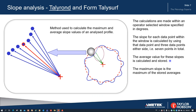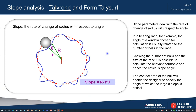The average slope is the average of all the stored average slopes. The units are microns radially per degree as we go around the part, so we're dealing in microns per degree for slope values. Slope is the rate of change of radius with respect to angle.